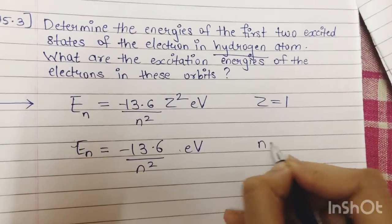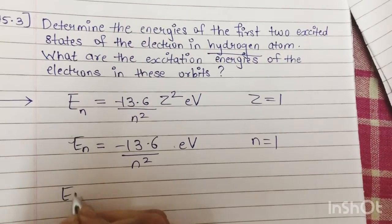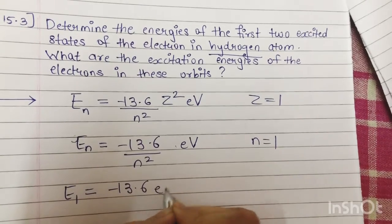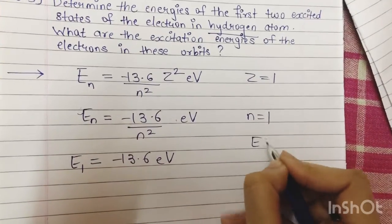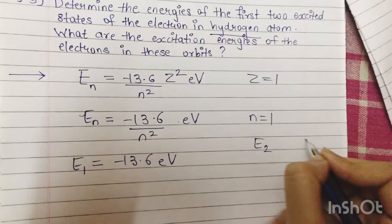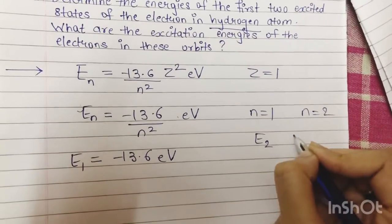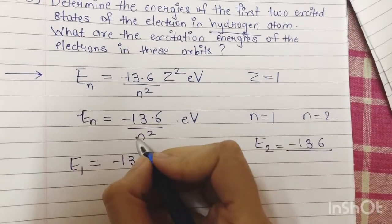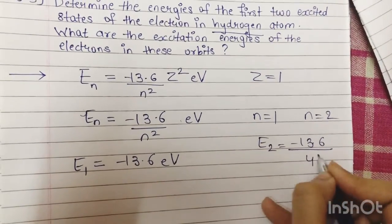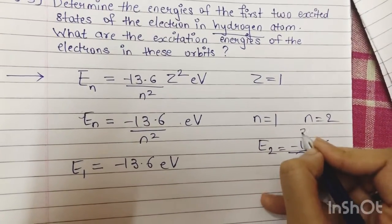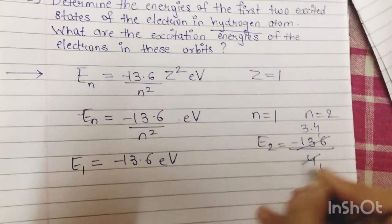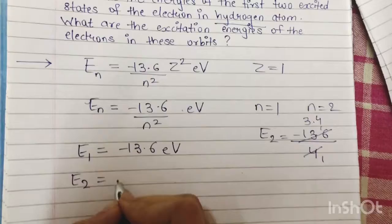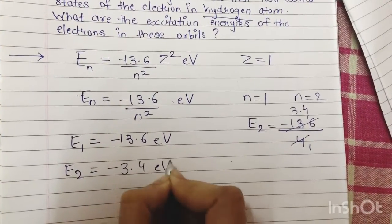First excited state: the value of N is equal to 1, so E1 = -13.6/1² = -13.6 electron volt. For the second excited state, E2, the value of N is 2, so E2 = -13.6/2² = -13.6/4. That gives us -3.4 electron volt for the second excited state.